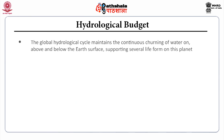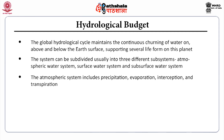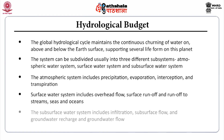Hydrological budget: the global hydrological cycle maintains the continuous churning of water on, above and below the earth's surface, supporting several life forms on this planet. The system can be subdivided into three different subsystems: the atmospheric water system, surface water system, and subsurface water system. The atmospheric system includes precipitation, evaporation, interception, and transpiration. The surface water system includes overland flow, surface runoff, and runoff to streams, seas, and oceans. The subsurface water system includes infiltration, subsurface flow, water recharge, and groundwater flow.